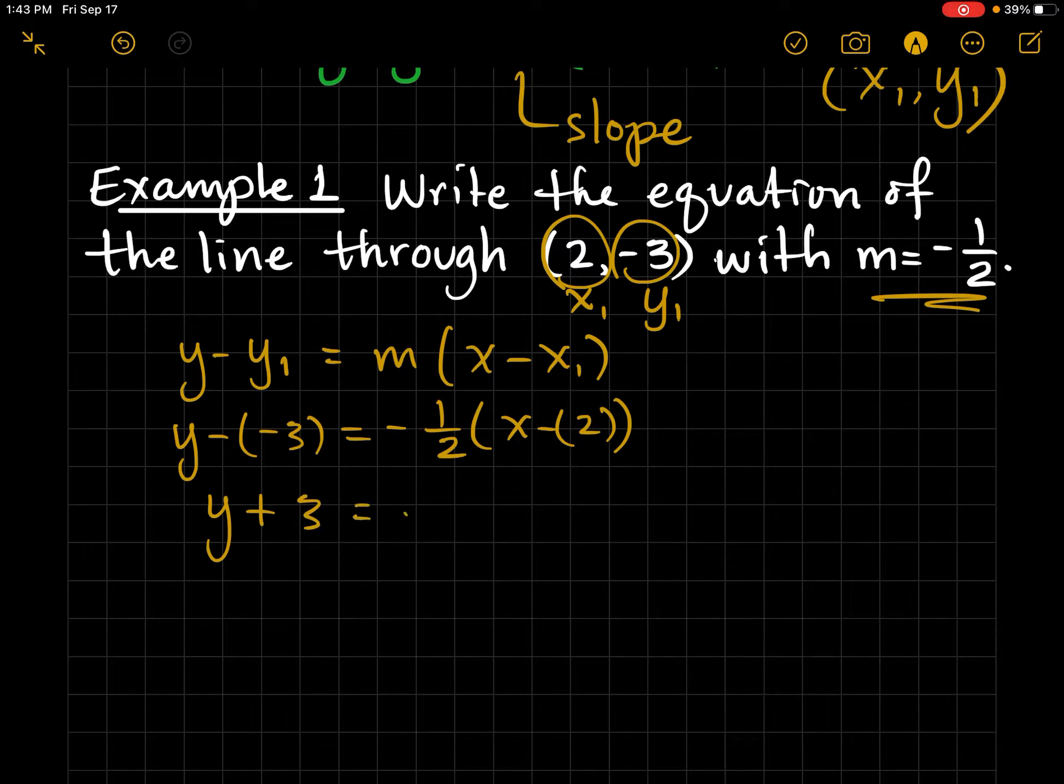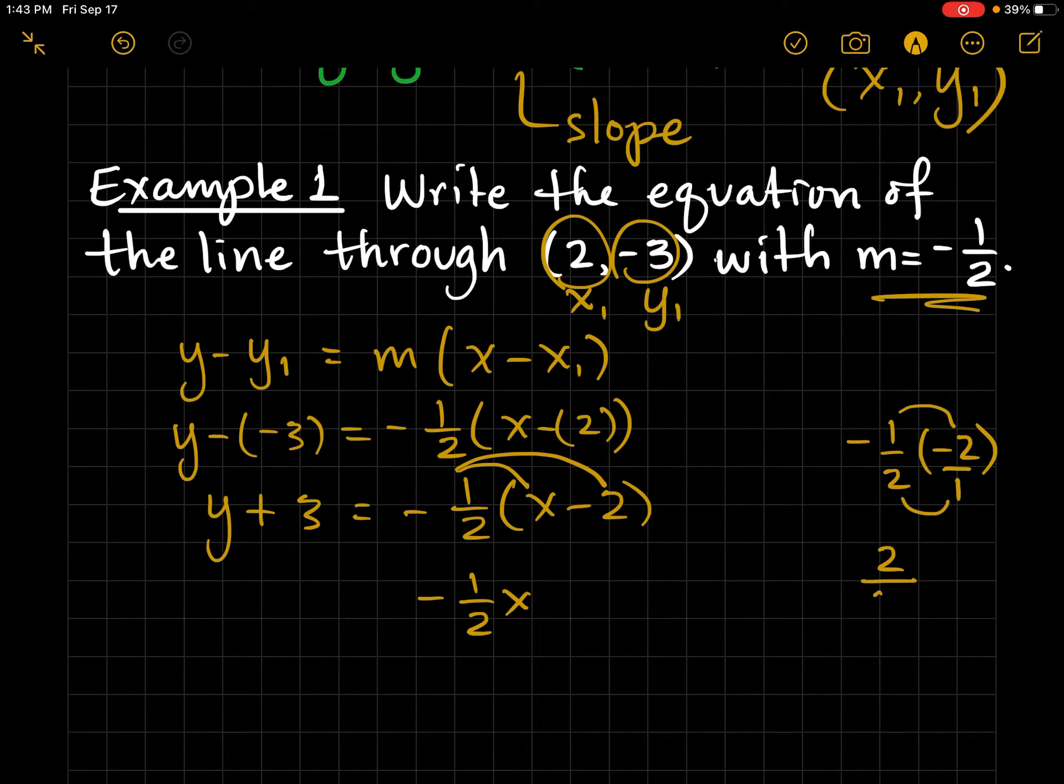So y minus y1. I like to use parentheses just to help keep things organized. And 2 is my x value. You don't have to use parentheses. It just kind of helps keep it organized. So y plus 3 equals negative 1 half x minus 2. Now we're going to use the distributive property. So negative 1 half x. And then negative 1 half times negative 2.